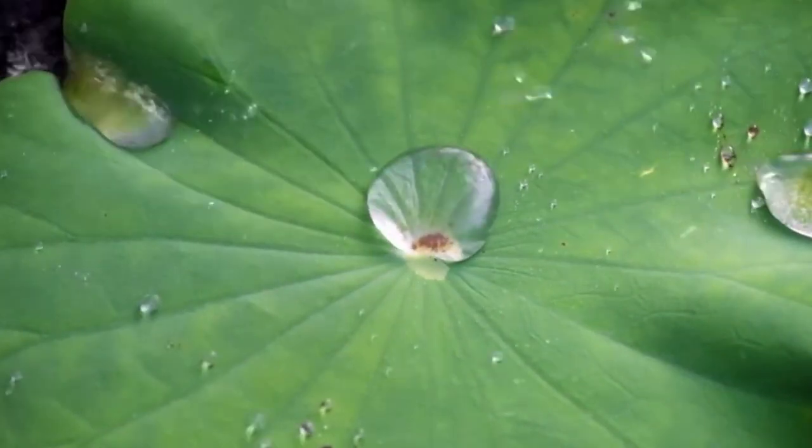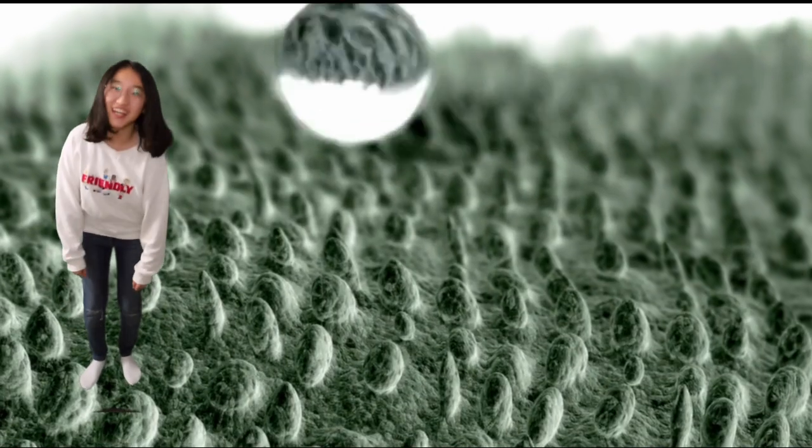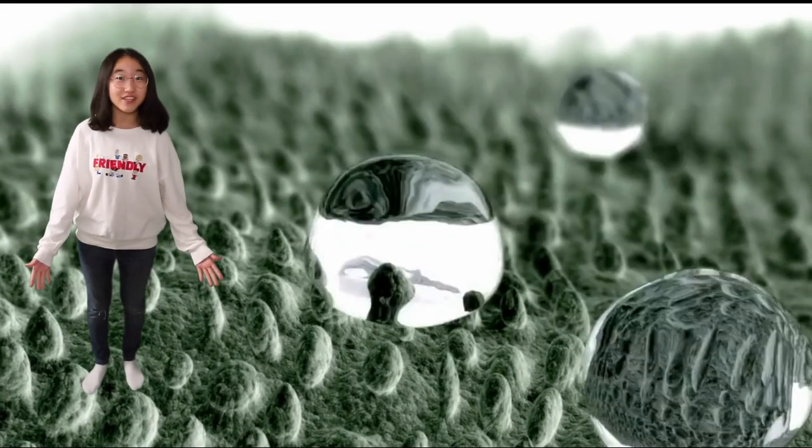Water forms spheres and bounces around until it slides off quickly. How does it work and what does it mean to us? Follow me to the nano world. Phew, I'm on the surface of a lotus leaf, and as you can see it is covered in bumps called papilla.